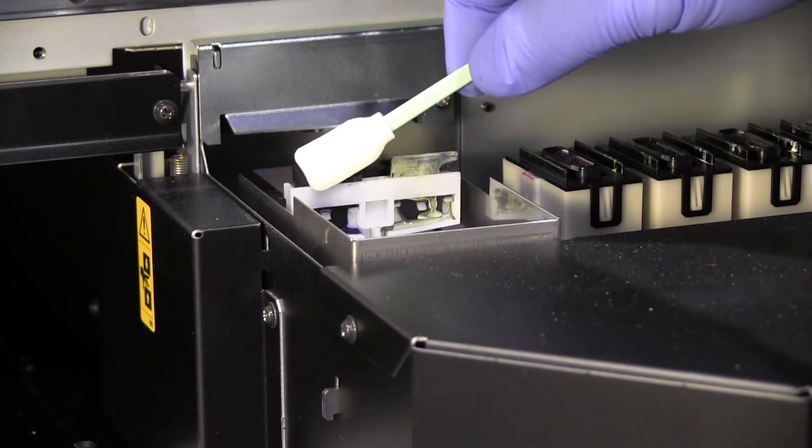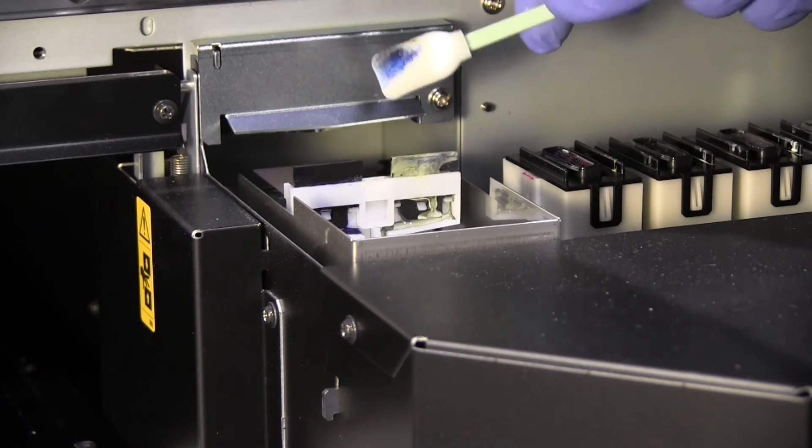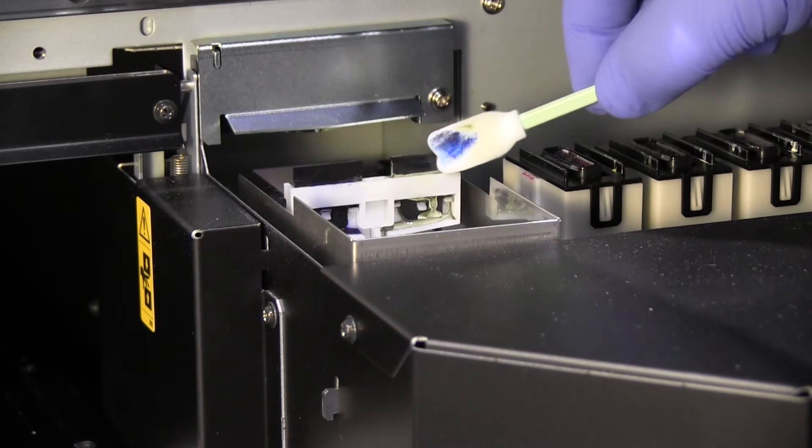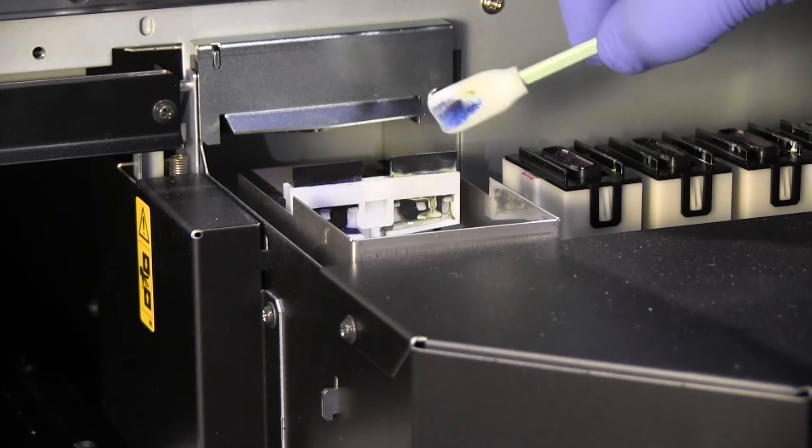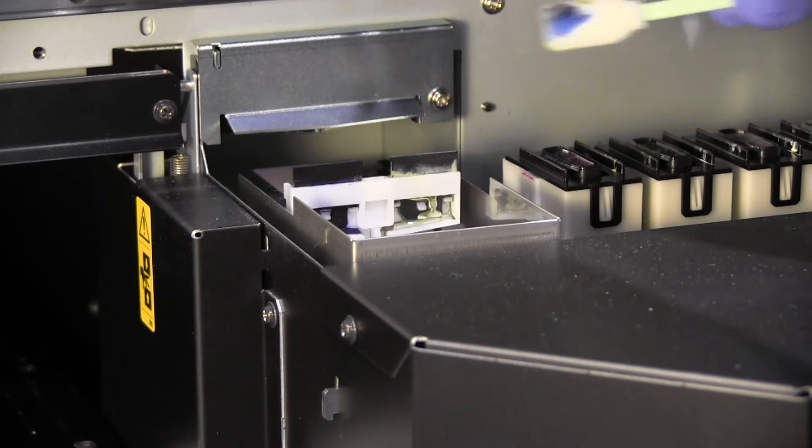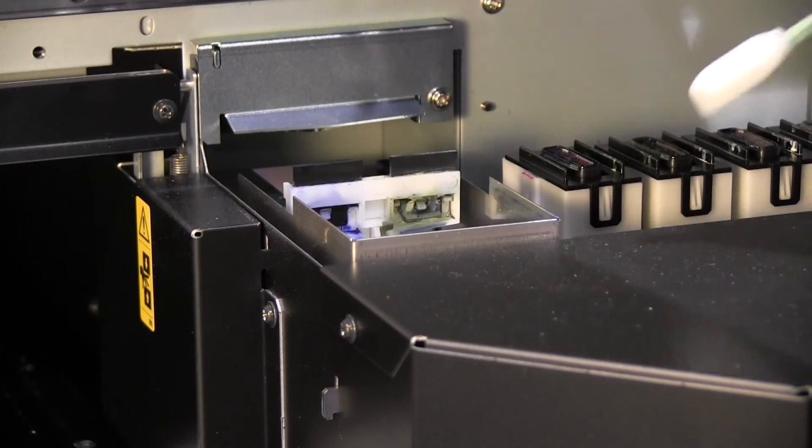Now moving over to the right hand side of the machine we will need to clean all around the wiper blades to remove any excess ink. You may need to gently rub at the surface of the wiper if ink has accumulated and dried there.